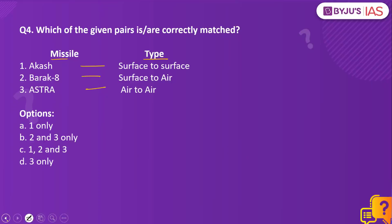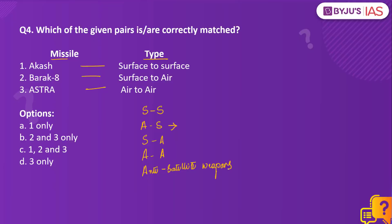A missile is a guided airborne range weapon. Missiles come in different types: surface-to-surface, air-to-surface, surface-to-air, air-to-air, as well as anti-satellite weapons. As and when you come across such missiles in the news, take note of these important details. We have just discussed that Akash is a surface-to-air missile, so we can eliminate option A and option C since statement 1 is wrong.